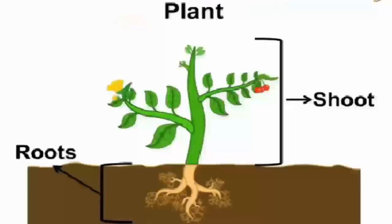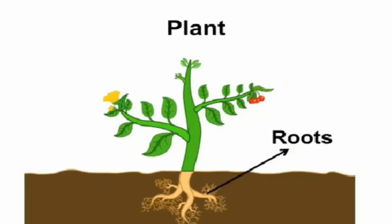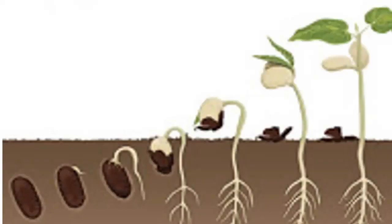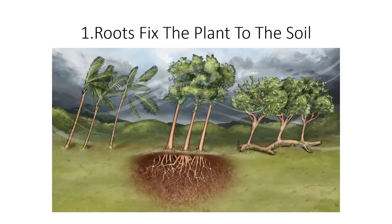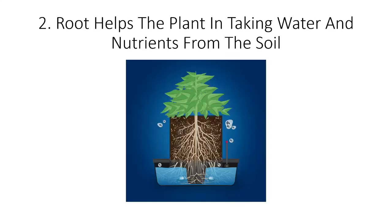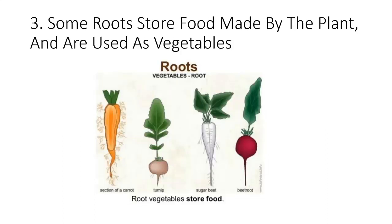We have already studied that there are many types of plants in our surroundings. There are two basic parts of a plant: root and shoot. The root is usually found below the ground — it is the first part to grow out of a seed. It plays an important role in the functioning of a plant as it fixes the plant to the soil and absorbs water and nutrients from the ground.